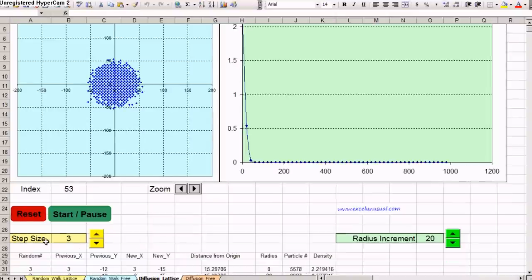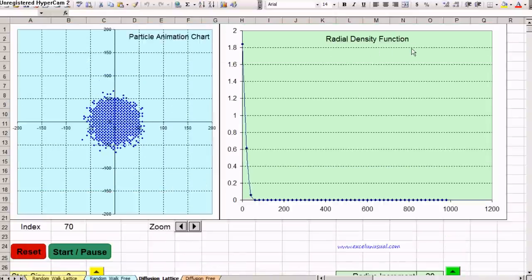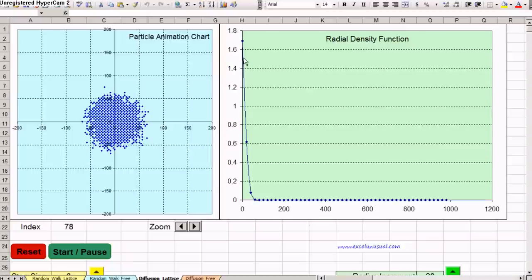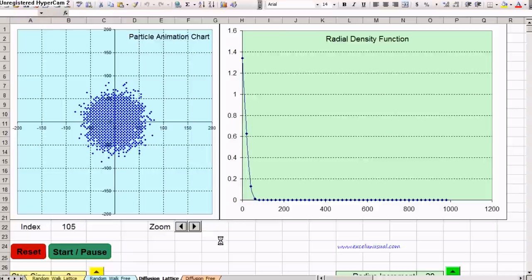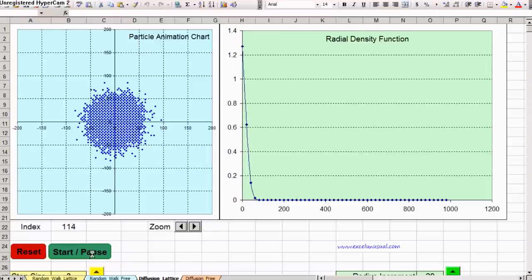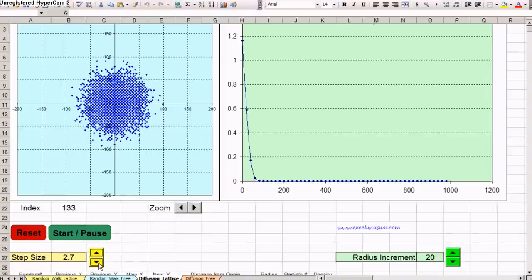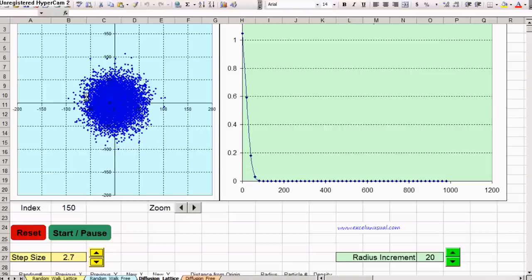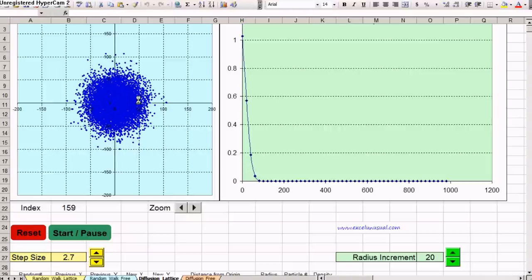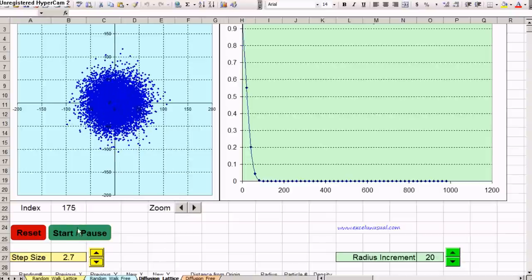We can adjust the step size. Here is a radial density function. It shows how many particles are constrained within a certain radius positionally. Now we can change the step size to 2.7 and you can see all this lattice constraint was destroyed.